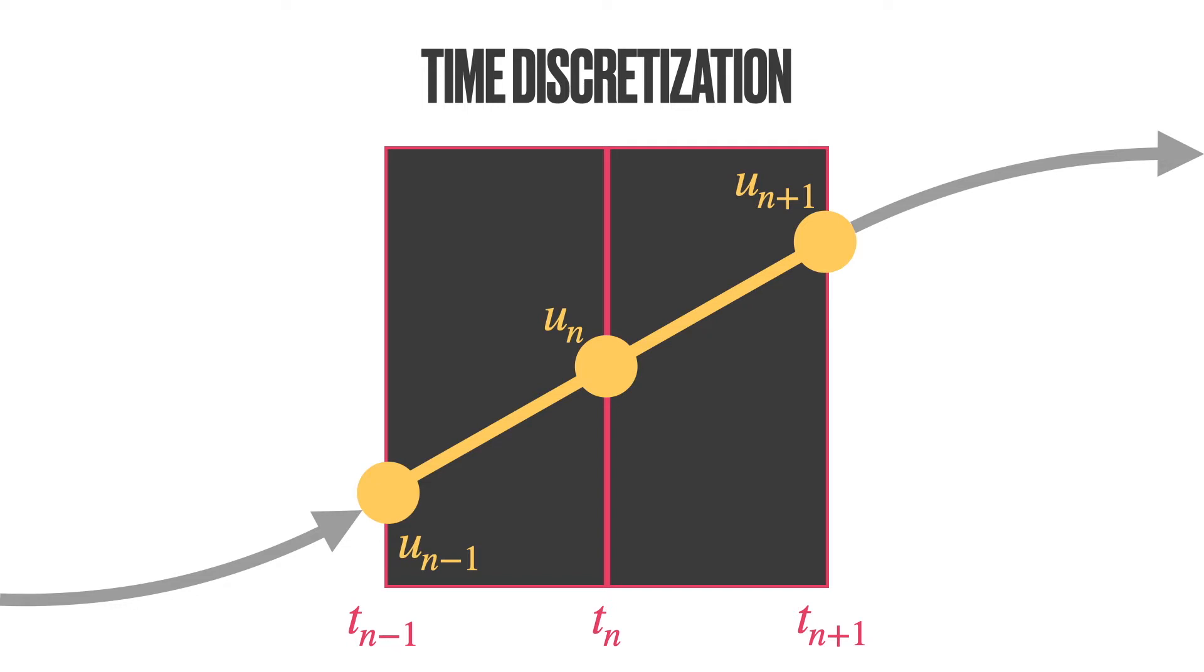Based on these quantities, we can construct differences. The difference in the displacement at un and un-1, the difference in the displacements at un+1 and un, and the differences in time. If the differences in time are constant, we could also denote that as delta t.